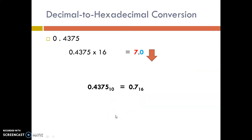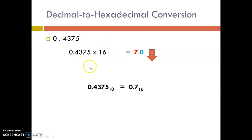Now we will see how to convert the fractional part. The fractional part is accomplished by successive multiplication. Since the radix is 16, we multiply it with 16, which equals 7.0. We cannot proceed further, so we stop here. The hexadecimal equivalent of this decimal number is 0.7.